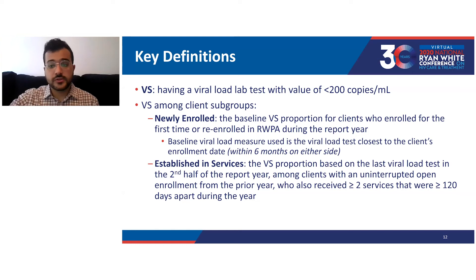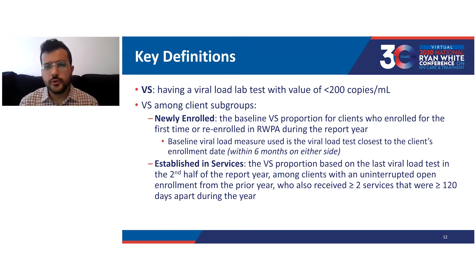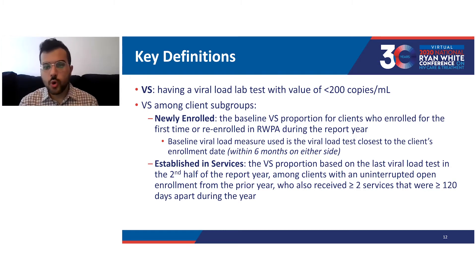Established in services represents the viral suppression proportion based on the last viral load test in the second half of the report year among clients with an uninterrupted open enrollment from the prior year who also received at least two services that were 120 days or more apart during the year. A quick note: the categories of newly enrolled and established in services are mutually exclusive, but they are not mutually exhaustive of all clients at the agency — meaning adding the number of eligible clients from the two groups will not account for the total clients at the agency.